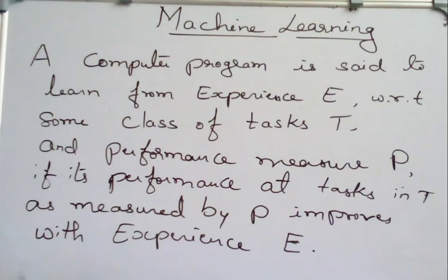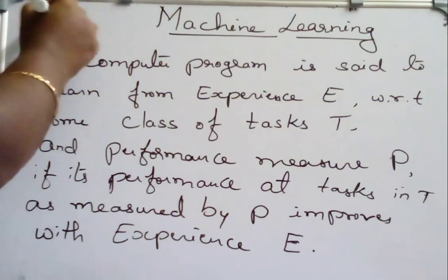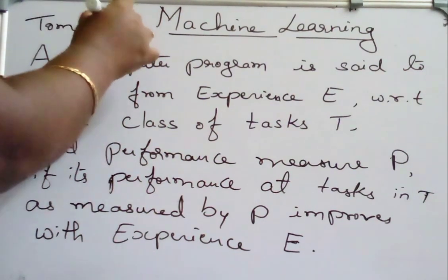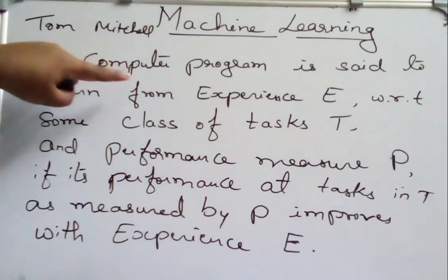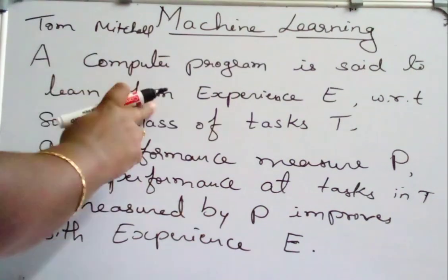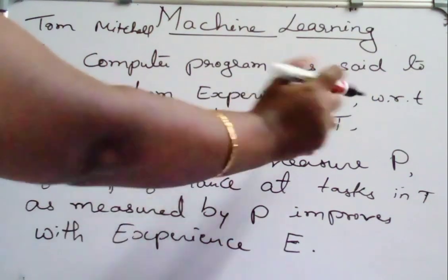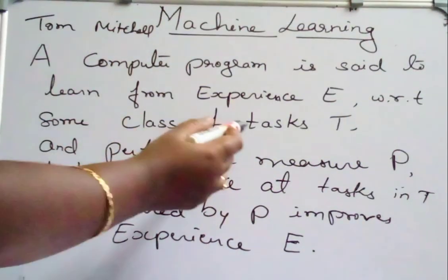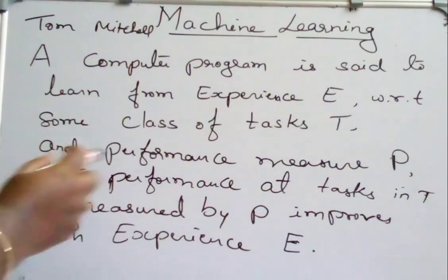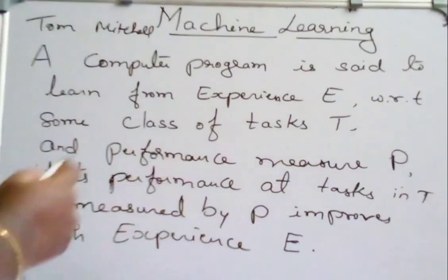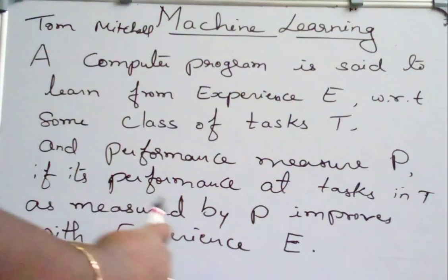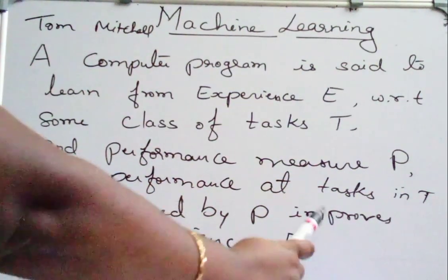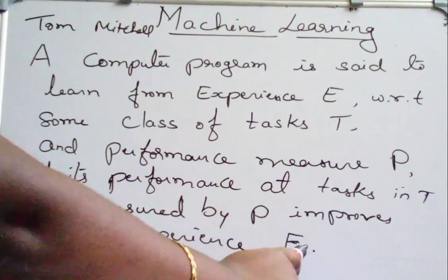Tom Mitchell has defined what actually is machine learning. According to Tom Mitchell, a computer program is said to learn from experience E with respect to some class of task T and performance measure P, if its performance at tasks in T, as measured by P, improves with experience E.